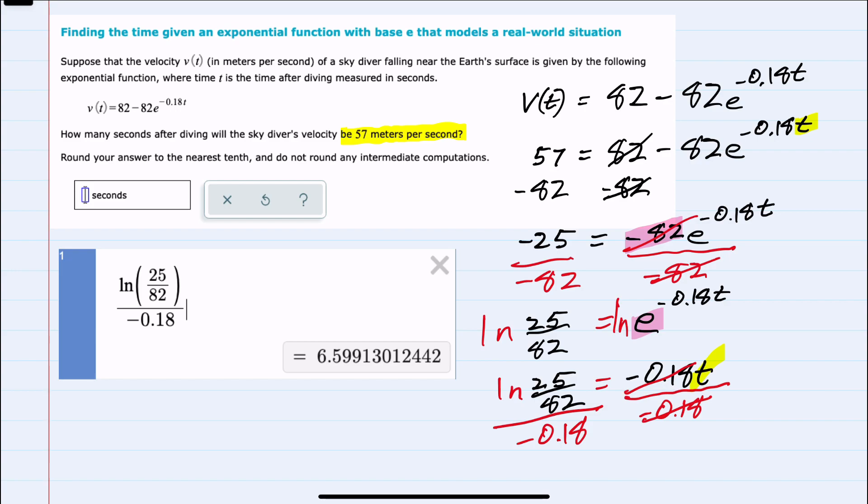And on the left-hand side, we have an expression that we can easily plug into a calculator such as Desmos to get a decimal approximation. We are told to round to the nearest tenth. So rounding to the nearest tenth would be the 5, which is followed by a 9. So I would round up. So my t is 6.6 seconds.